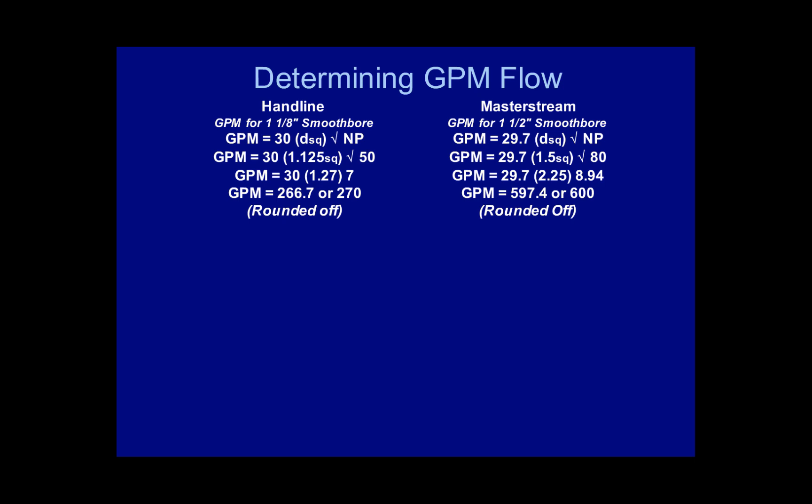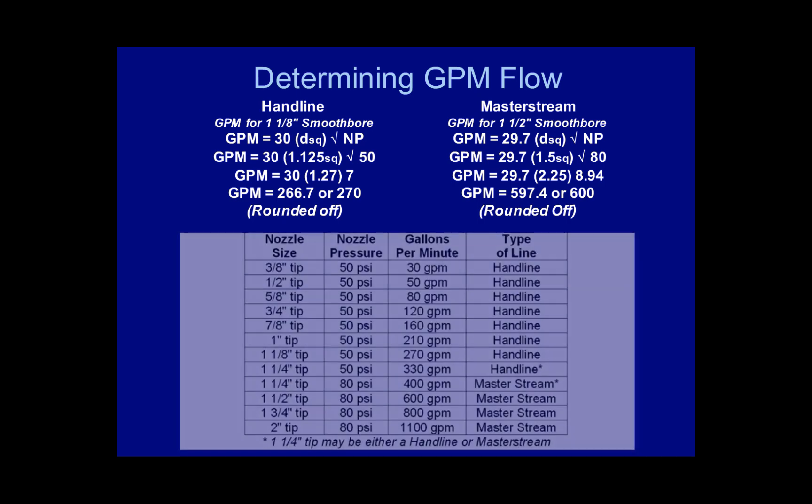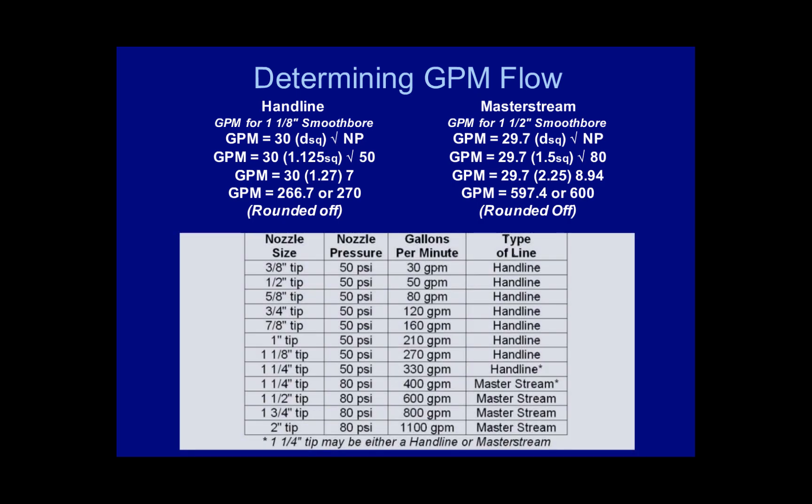Let's look at a master stream appliance and determine the GPM for an inch and a half smoothbore tip. We will use the more precise formula: GPM equals 29.7 times diameter squared times the square root of the nozzle pressure. GPM equals 29.7 times 1.5 squared times the square root of 80 for a master stream, equaling 29.7 times 2.25 times 8.94, which equals 597.4, or rounded off to 600 GPM. A table is provided to illustrate GPM flows for a variety of tips; note that an inch and a quarter tip can be used as either a handline or a master stream.